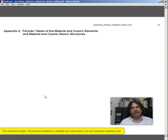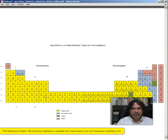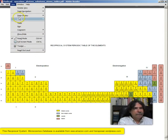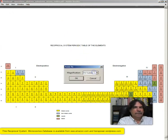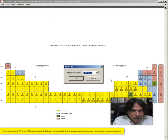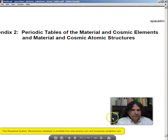Okay, now, Appendix 2. Periodic tables of the material and cosmic elements and material and cosmic atomic structures. Here's the reciprocal system periodic table of the elements. I first developed this table for my book on the reciprocal system in the mysterious universe way back in 1971. And nothing's really changed. Let's see if we can zoom in here.